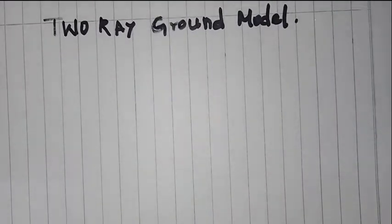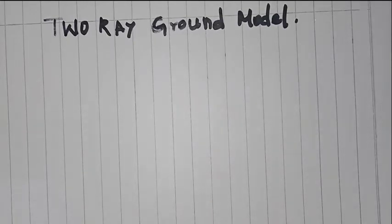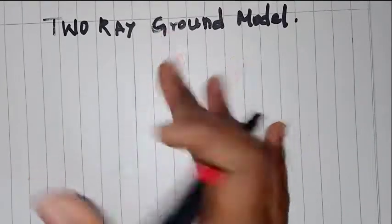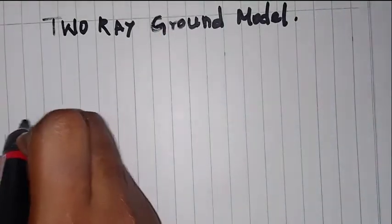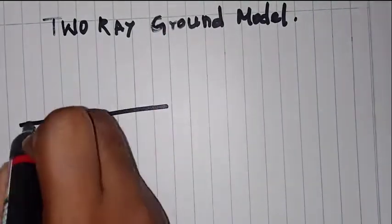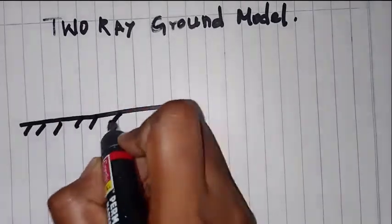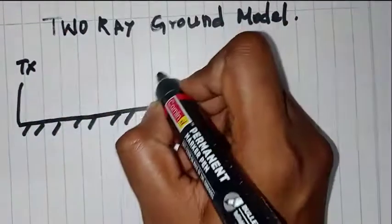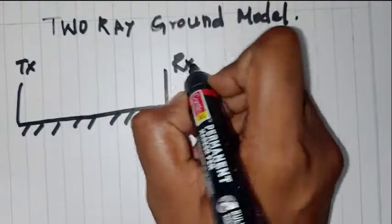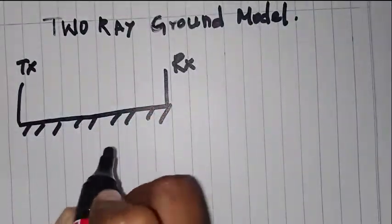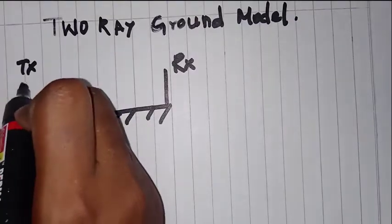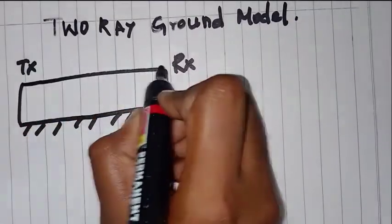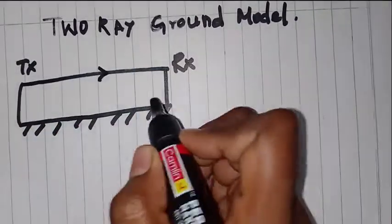This free space propagation model is an advancement model which we have already studied. In that model, we will have a ground surface, a transmitter, and a receiver. The basic assumption is that we will have only line-of-sight communication, and we calculate free space propagation based on that.